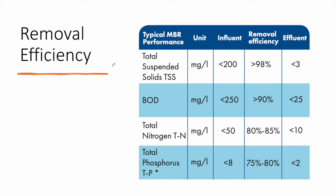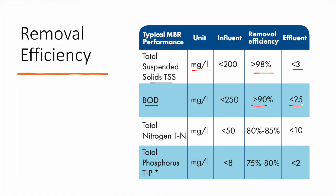Regarding removal efficiency, we have very high reduction of total suspended solids. If your influent is less than 200 mg/L, you can expect 98% removal of TSS, giving an effluent of less than 3 mg/L — a very clear effluent. We also have high reduction of BOD greater than 90%; if the influent has around 250 mg/L of BOD, you can expect a BOD less than 25 mg/L. Additionally, high reduction of total nitrogen at 80–85% and high reduction of total phosphorus at 75–80%. You can meet most international and national standards easily.